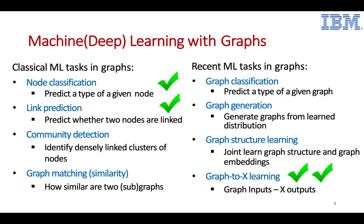Before deep learning on graph, machine learning on graph has been a long-standing problem. Classically, people worked on node classification — predicting the type of a node given its embedding. Link prediction determines if two nodes are linked. Community detection clusters nodes that behave similarly. Graph matching compares two graphs for similarity. With the rise of deep learning, people focus on applying deep learning techniques to graphs.